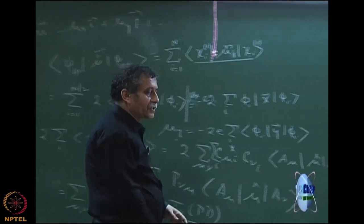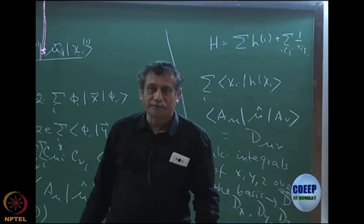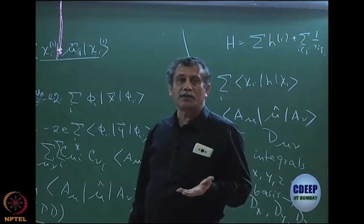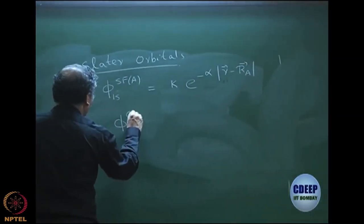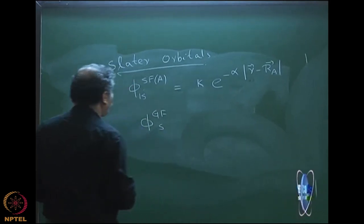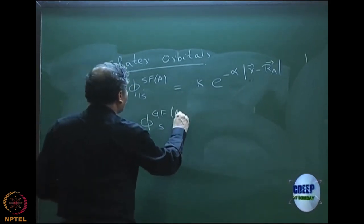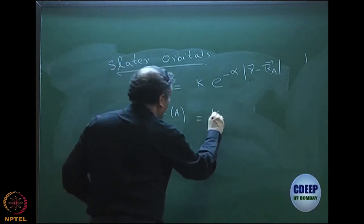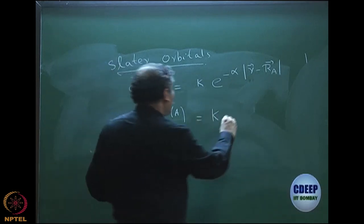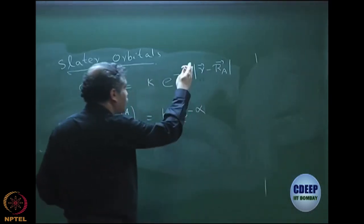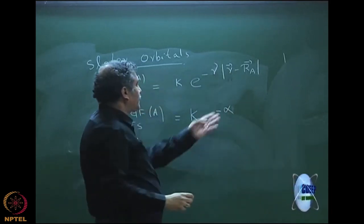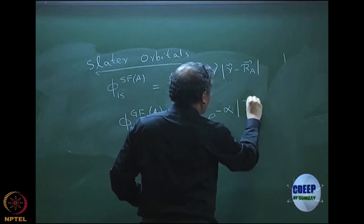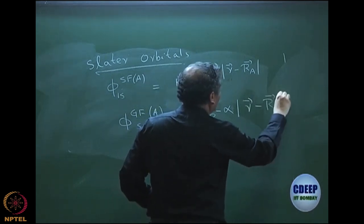The problem with the Slater functions is that they are not very easy to manipulate, and that is the reason people go to what are called Gaussian functions — Gaussian functions are easy to manipulate. The form of a Gaussian function, S-type centered on atom A, is: some proportionality constant k1 times exponential minus gamma times |r − r_A|².